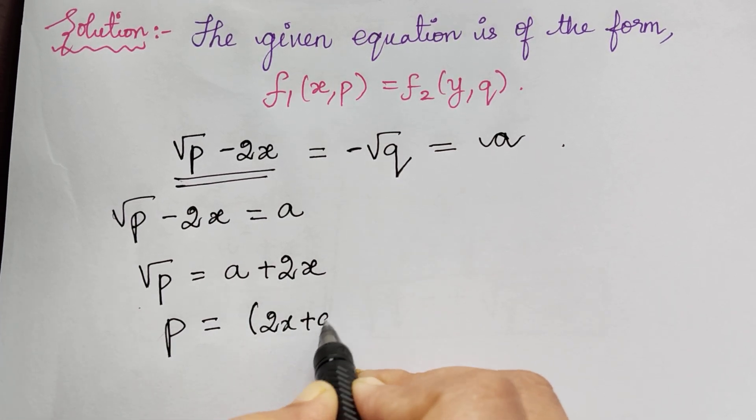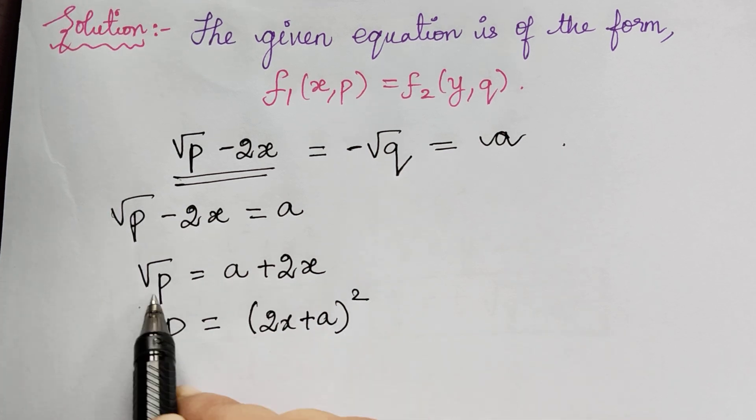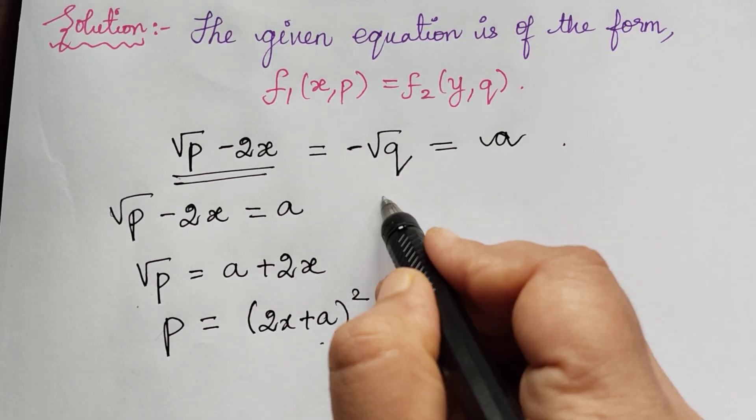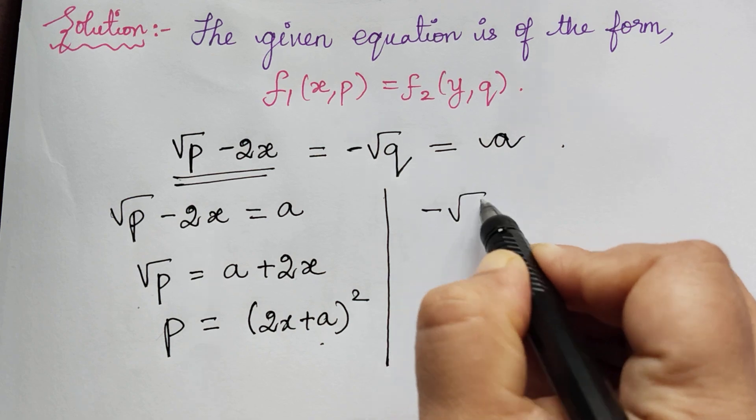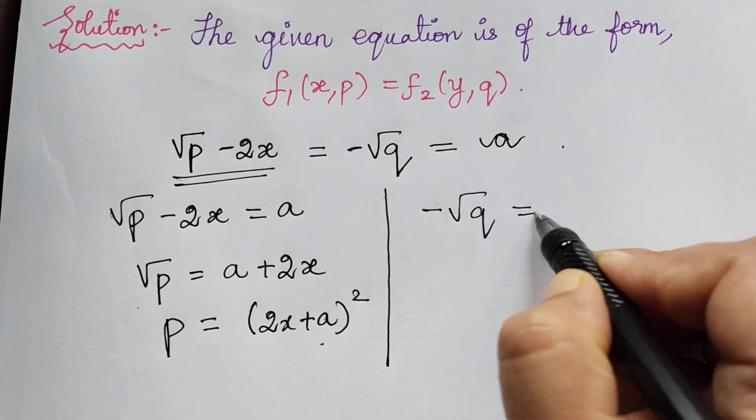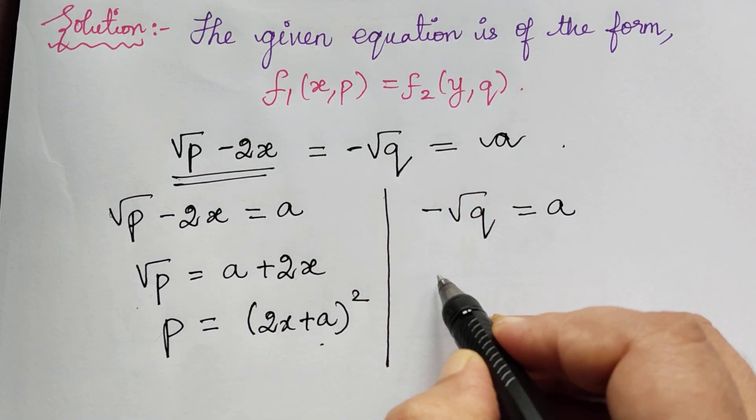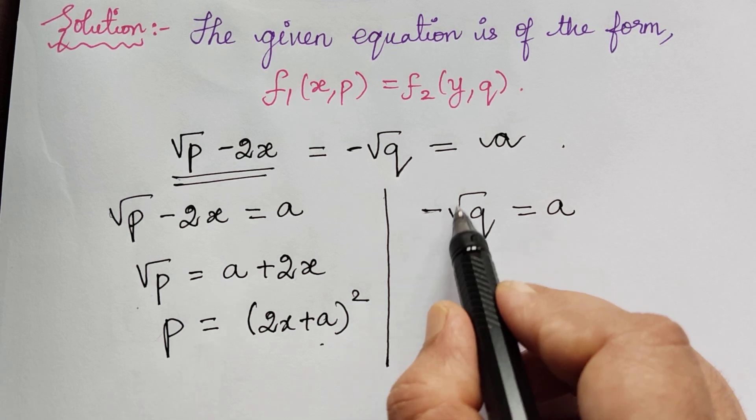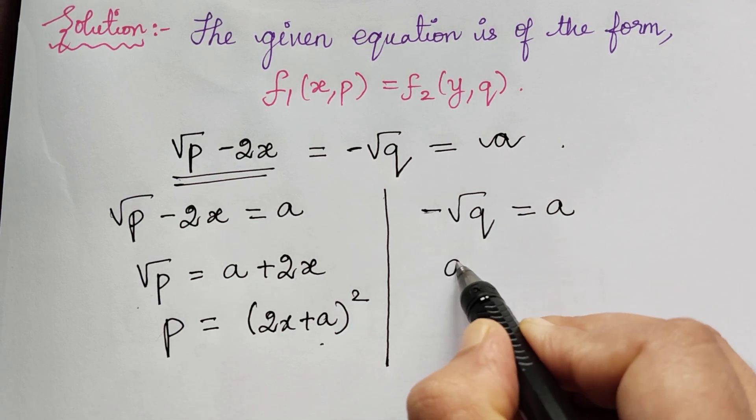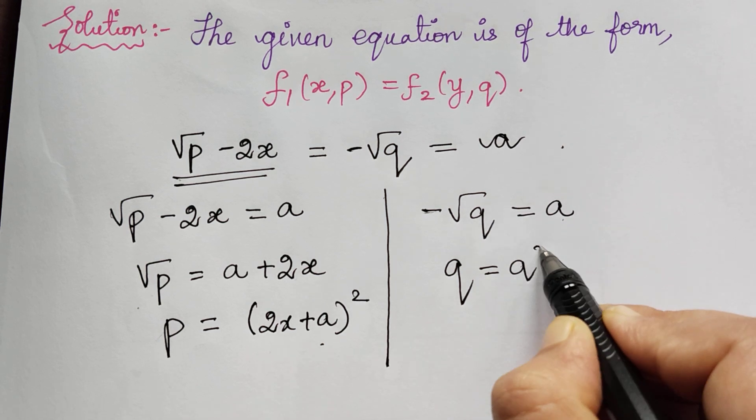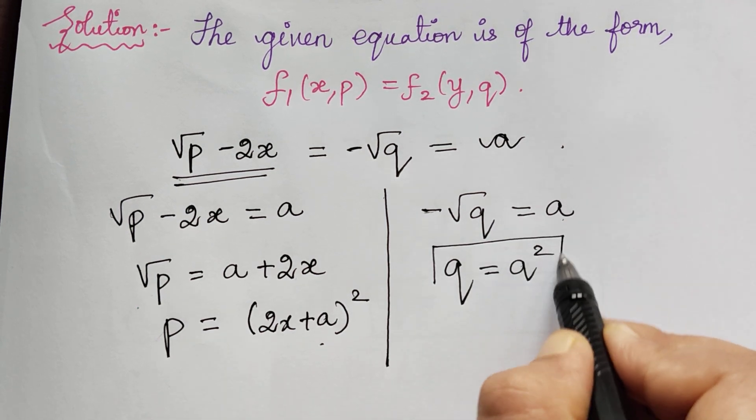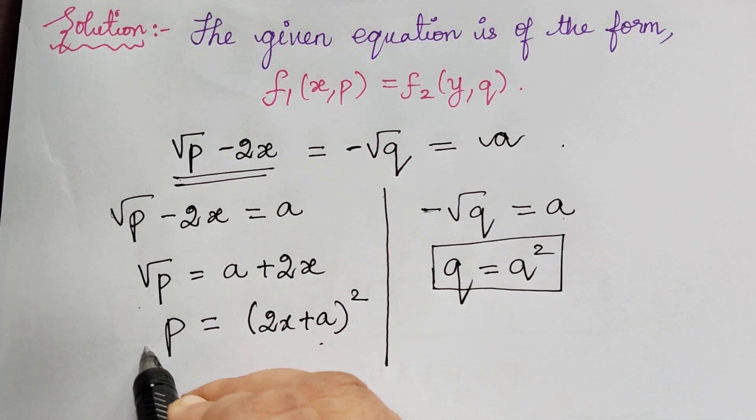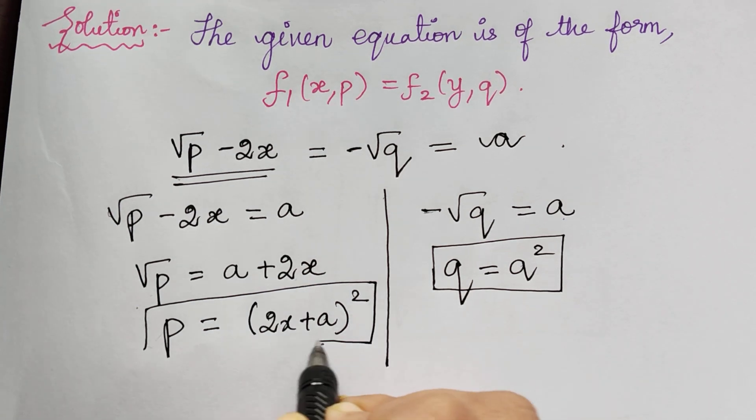In a similar way, -√q = a. Squaring on both sides, this negative sign will become plus, and the square of the square root will vanish, so q = a². This is the value of q, and the value of p is (2x + a)².